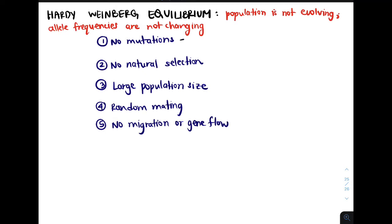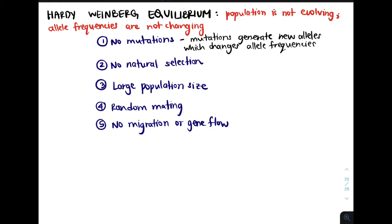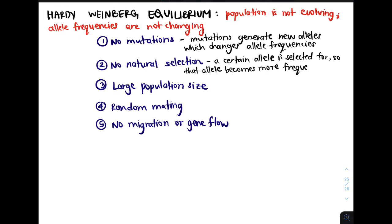Let's see what happens when these are violated. If we do have mutations, then we're able to generate new alleles, which does change allele frequencies — therefore it's important to have no mutations. If we have natural selection, then a certain allele is selected for, so that allele is going to become more common in the population.